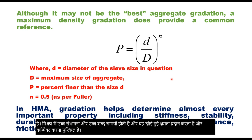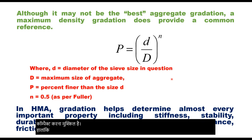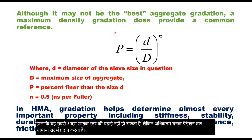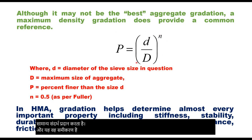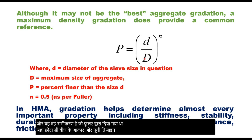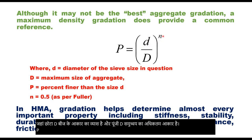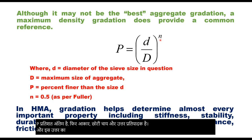Although it may not be the best gradation, a maximum density gradation does provide a common reference. This is the equation given by Fuller, where small d is the diameter of the sieve size and capital D is the maximum size of aggregate. P is the percent finer than size d, and n is an exponent. The value of n was taken as 0.5 as per Fuller.